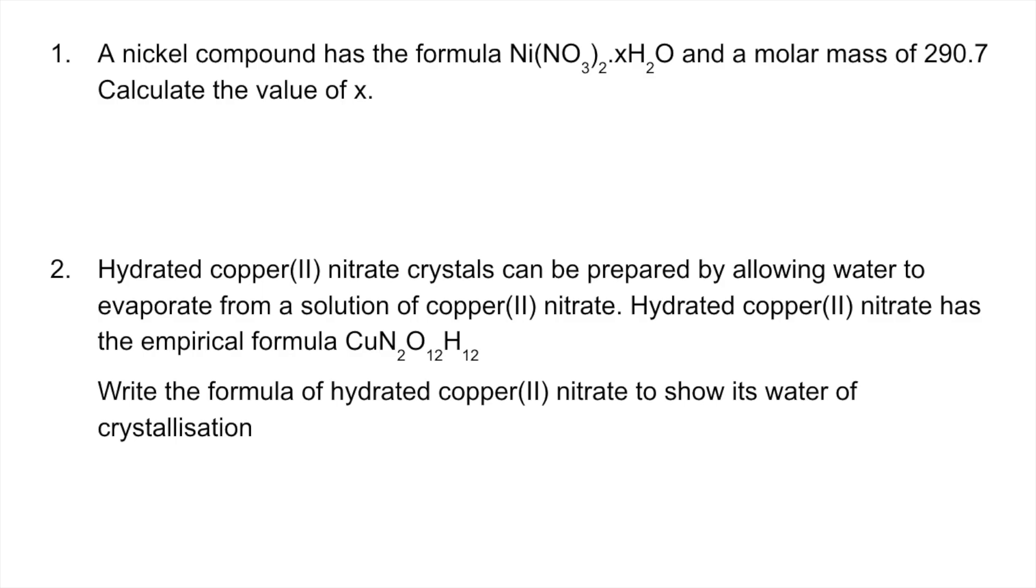Okay, so the first one we're going to work out the MR of the bit we know, so the Ni(NO3)2, that's the anhydrous part of the salt, that's 182.7. So to work out the mass of the X waters we subtract that from the total mass, so that's 108 for the X H2O part. And then if we just divide that by the MR of water, we can find out how many waters are in there and that's six. So the formula is Ni(NO3)2·6H2O.